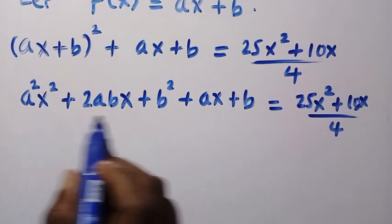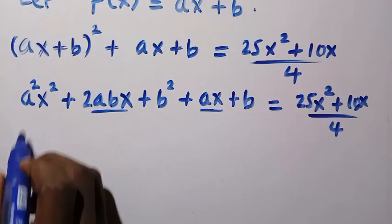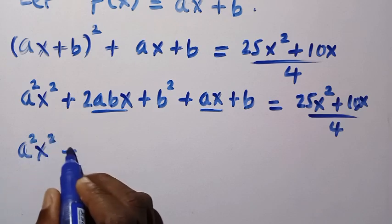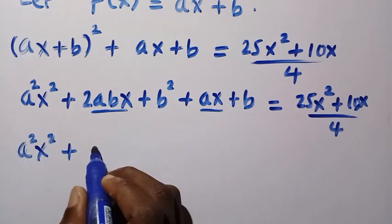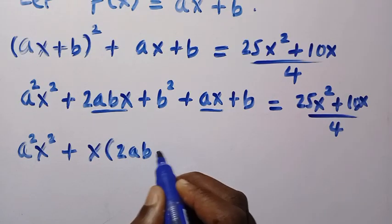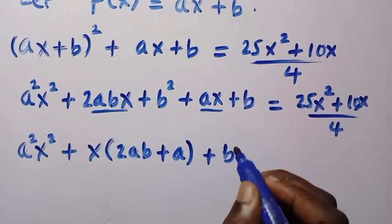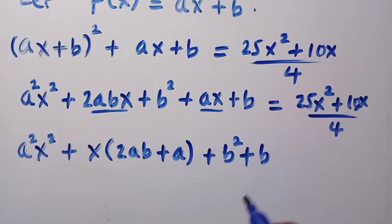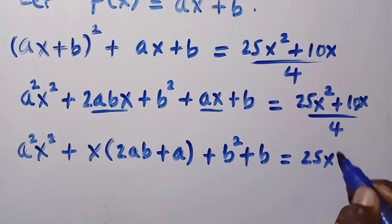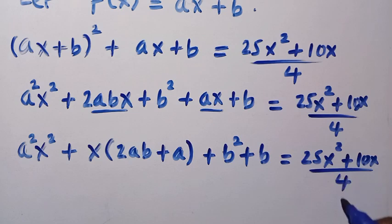We proceed by combining ax and 2abx because they have x in common. So we write this as a squared x squared plus, factoring out x from here, in the bracket we have 2ab plus a. Then we have b squared plus b. This equals 25x squared plus 10x divided by 4.